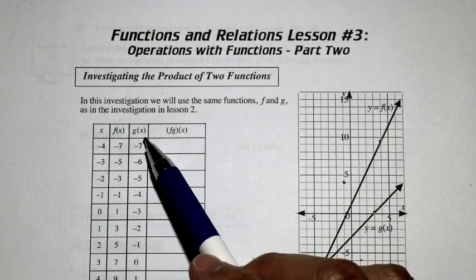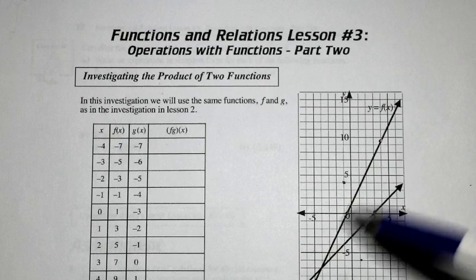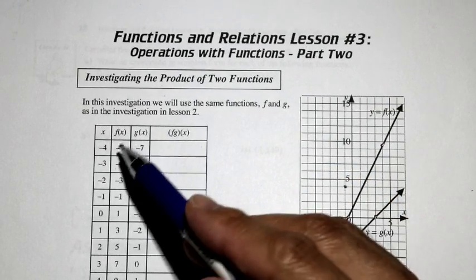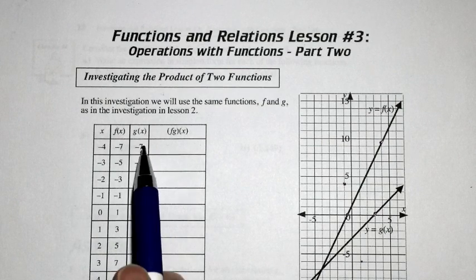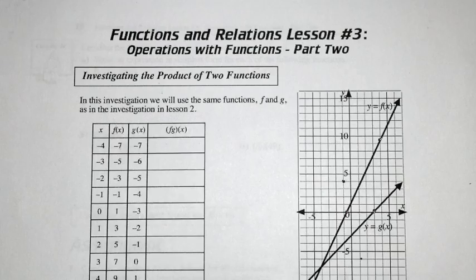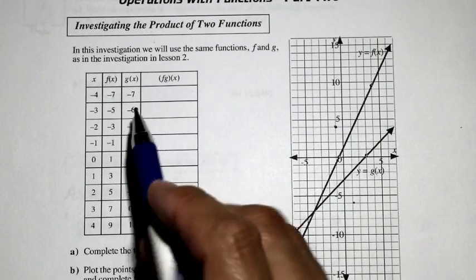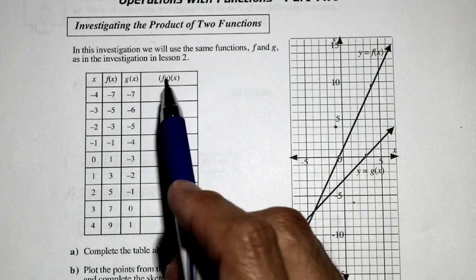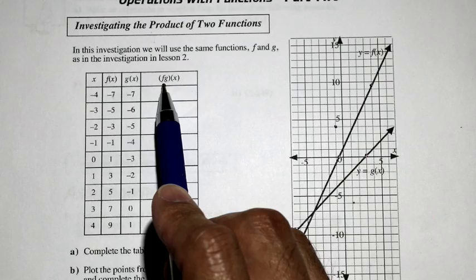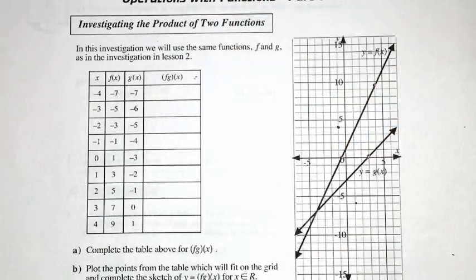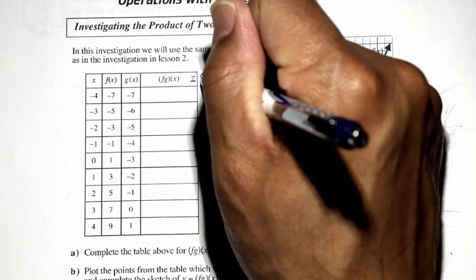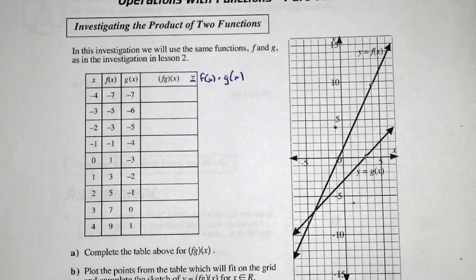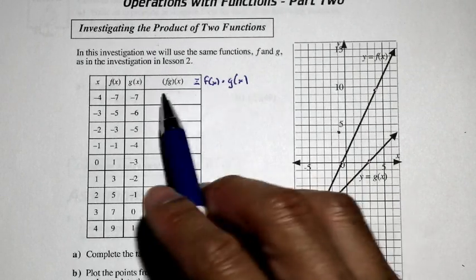Let's take a look at this f of x and g of x. What we have here is a defined linear function, f of x, and a defined linear function, g of x. We have all the y values associated with f of x, one for each of these x's, and then a y value for g of x as well. So we're going to fill in this chart and see what fg in brackets with that x there means. If you remember from the previous lesson, this notation means f of x times g of x — the y value of f of x times the y value of g of x.